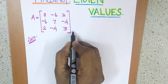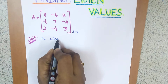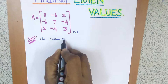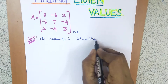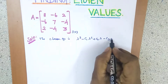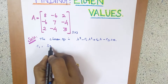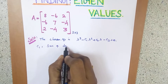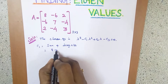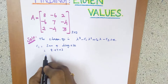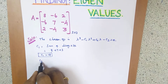For a 3×3 matrix, the characteristic equation is λ³ - C1·λ² + C2·λ - C3 = 0. C1 is the sum of the diagonal elements. Here the diagonal elements are 8, 7, and 3, so 8 + 7 + 3 = 18. Therefore C1 = 18.